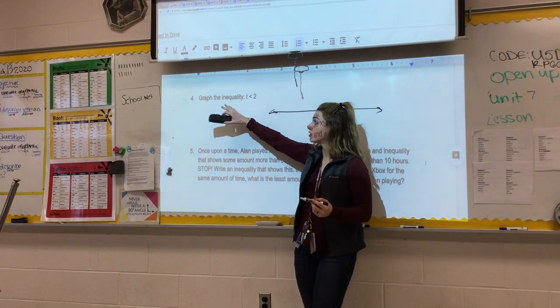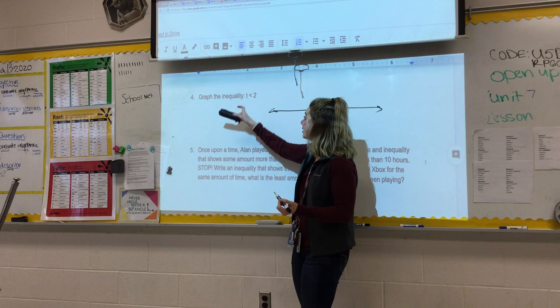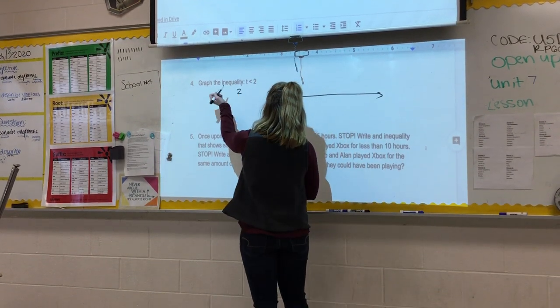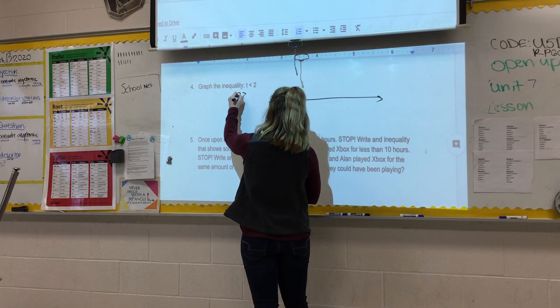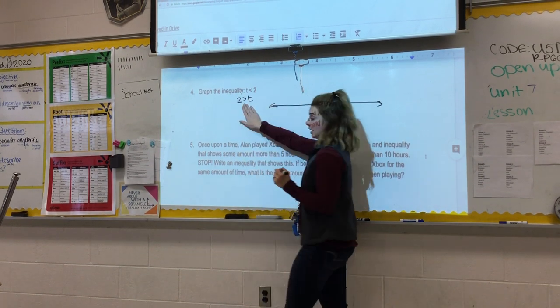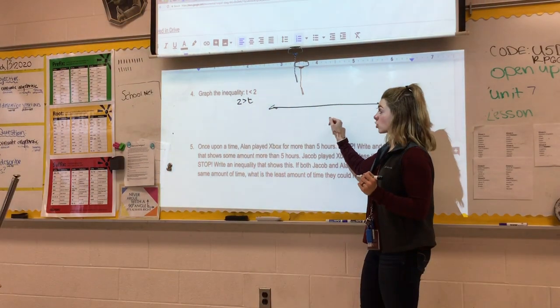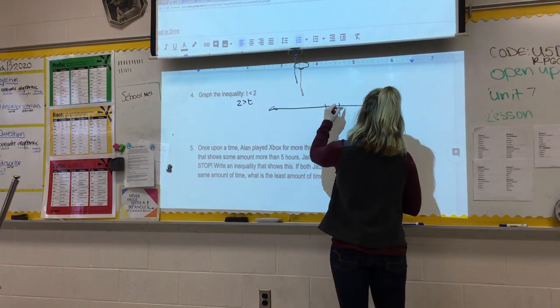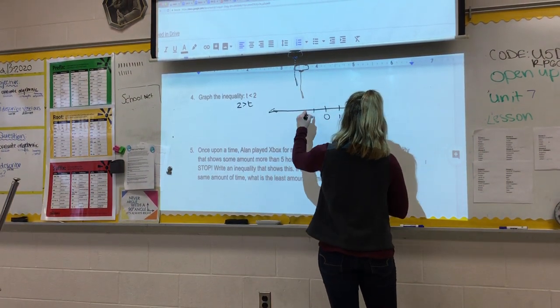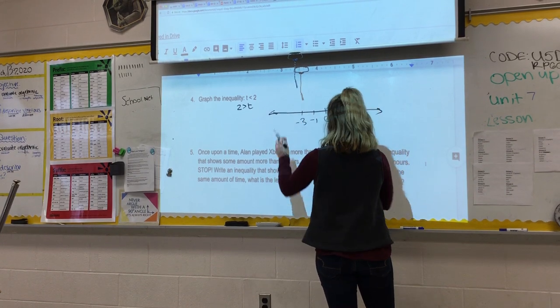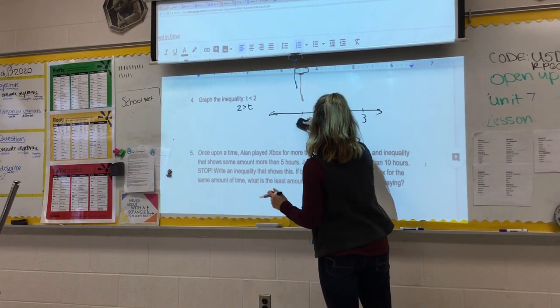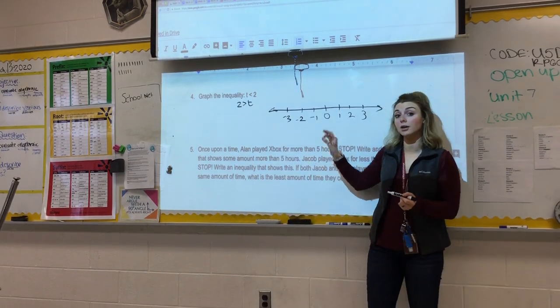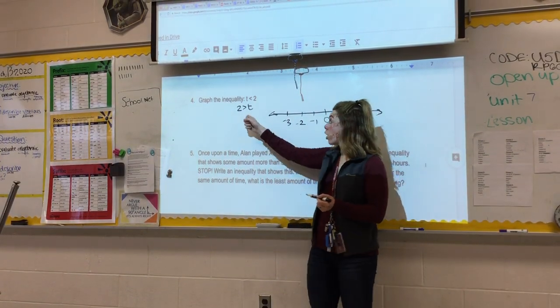So as you can see, this problem also says graph the inequality. t is less than 2, which could be also written as 2 is greater than t. So I'm going to go ahead and draw my number line because remember that's what the graphing is. So I'm going to have 0, 1, 2, 3, negative 1, negative 2, oops, wrote a 3, said 2, negative 2, negative 3. So now I know that I'm going to plot my number over the 2.